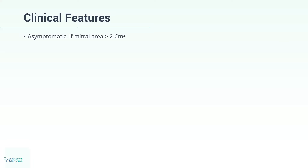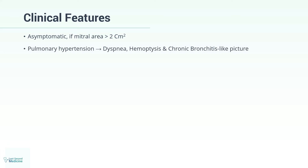Clinical Features. Patients are usually asymptomatic until the mitral valve area is reduced to approximately 2 square centimeters. Pulmonary hypertension causes dyspnea, hemoptysis, and a chronic bronchitis-like picture.